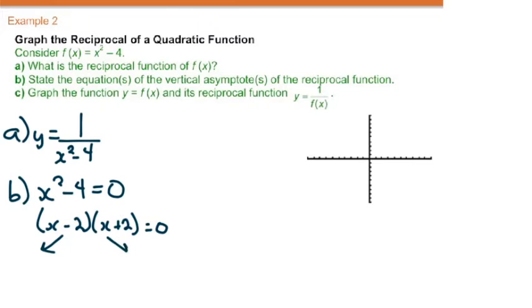Splitting off to solve, we get x equals 2 and x equals negative 2. So this graph will in fact have two vertical asymptotes, breaking the graph into three separate sections.